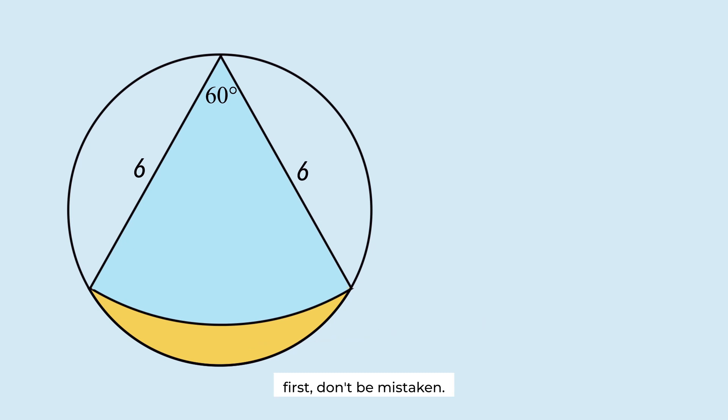First, don't be mistaken. This is not a sector. This is a sector. The shaded area is the area of this figure minus the area of the sector.